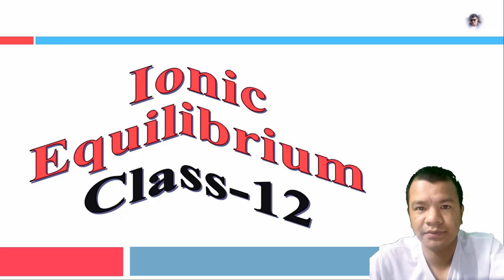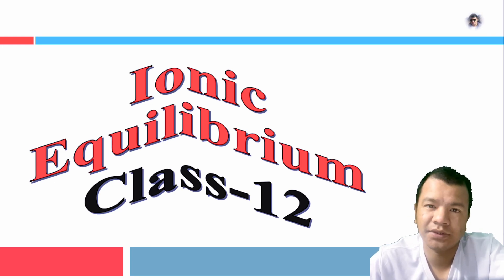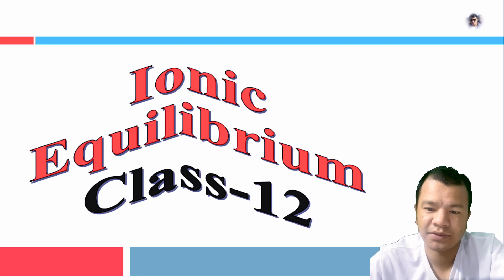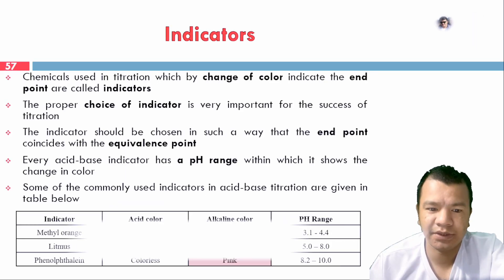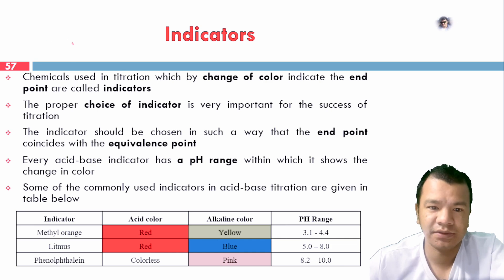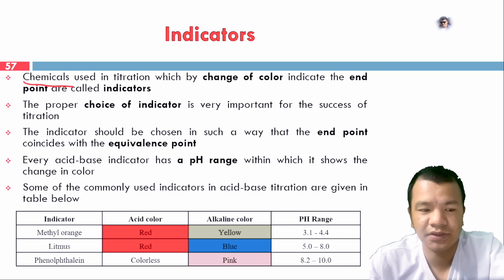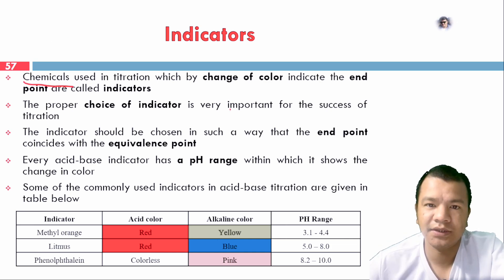Hello everyone. I am using the acid-base indicator. We are using the selection of indicators in acid-base titration. Indicators are the chemicals which change their color and indicate the endpoint of the titration.